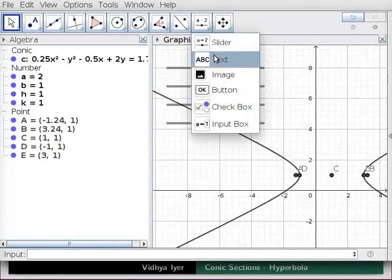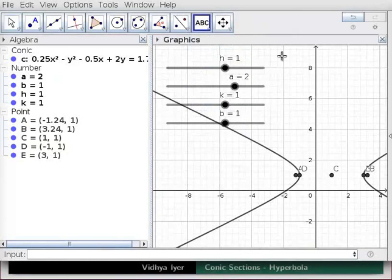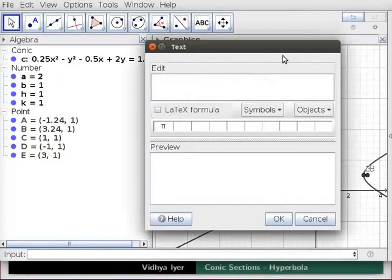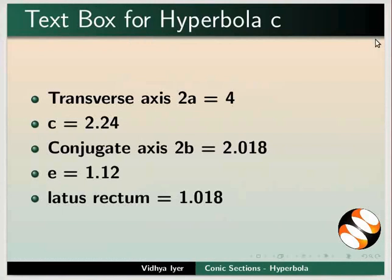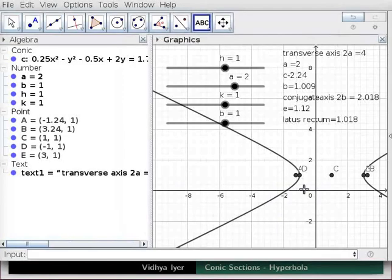Under slider, click on text and click in graphics view. A text box opens up. In the edit field, type the following text. Press enter after each line to go to the next line and click OK. Refer to additional material provided with this tutorial for these calculations.